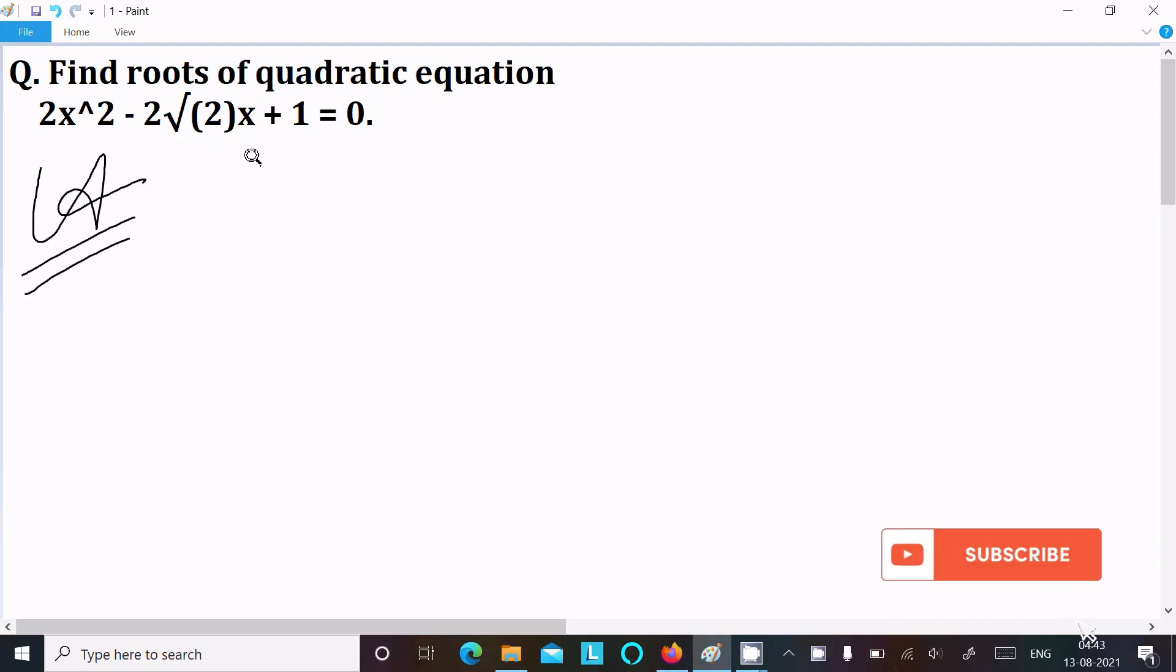So first here writing the given equation 2x² - 2√2x + 1 = 0. Here we need to find the value of x, so write here x and write the formula.